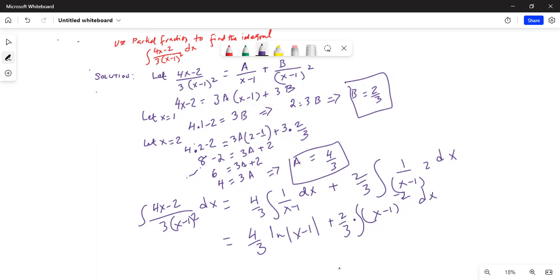The first term remains unchanged: 4/3 ln absolute value of (x minus 1) plus 2/3 times (x minus 1) to the power (minus 2 plus 1). We should also add an integration constant over here.